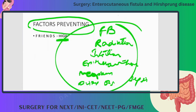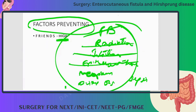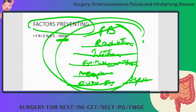You have to address each factor: if any foreign body or suture is there, remove it; if radiation is there, stop it; if there is infection, treat it; de-epithelialize it; treat neoplasm; remove distal obstruction; treat sepsis. If any of these are present, the fistula will not heal.